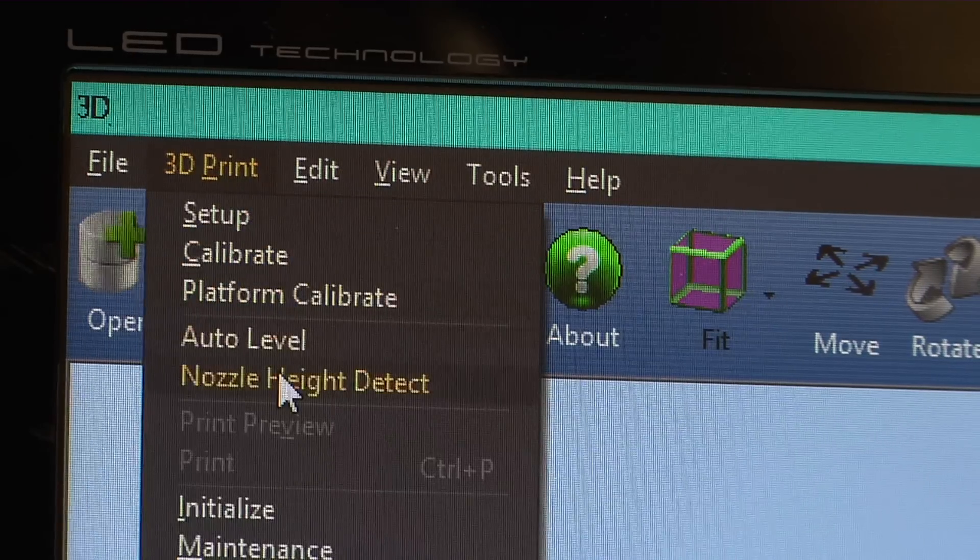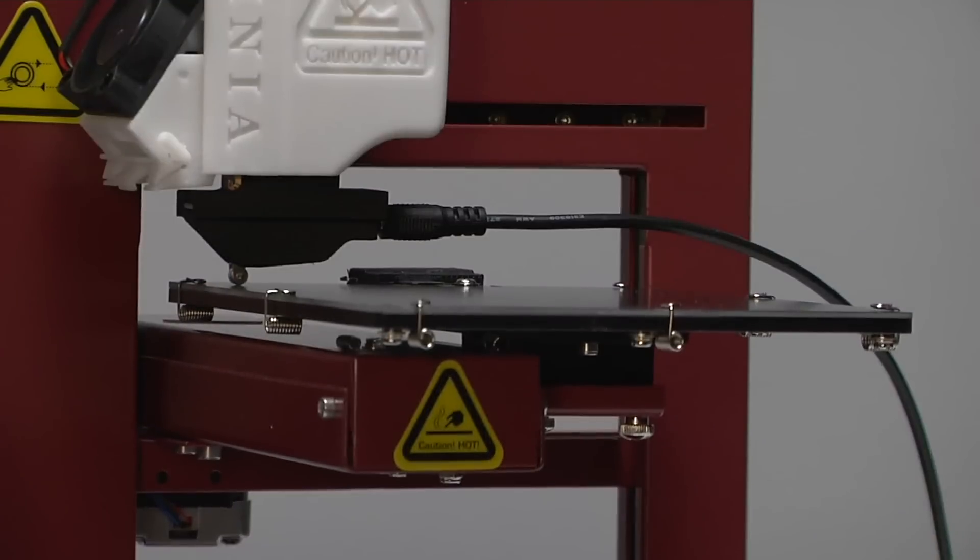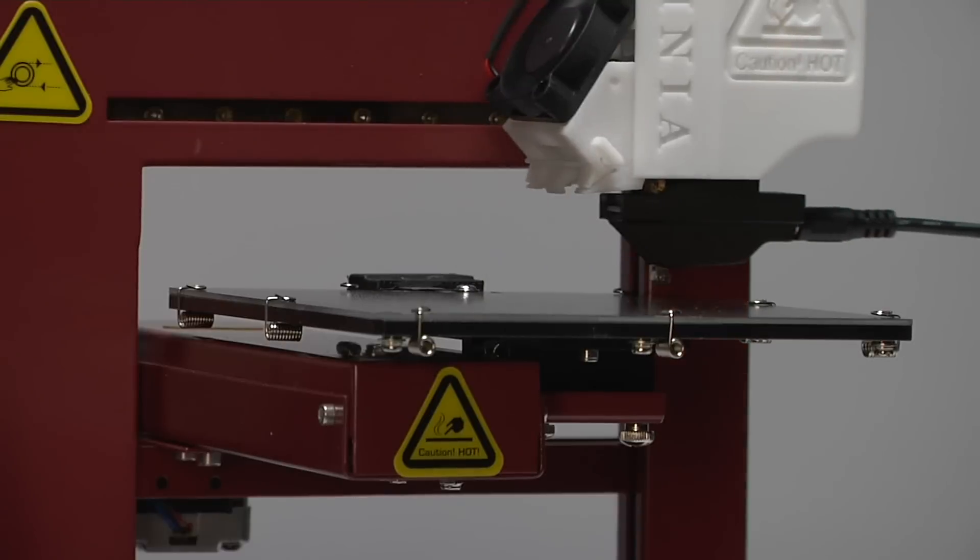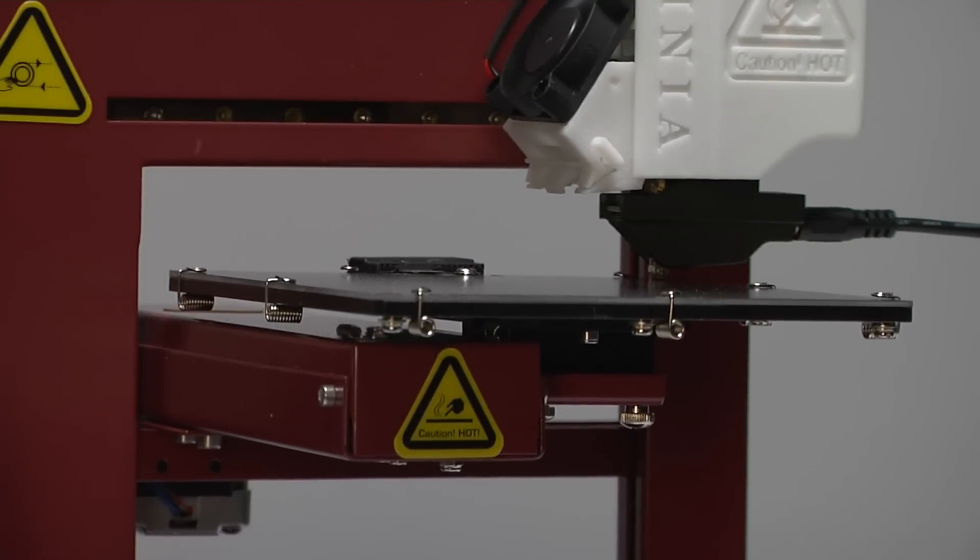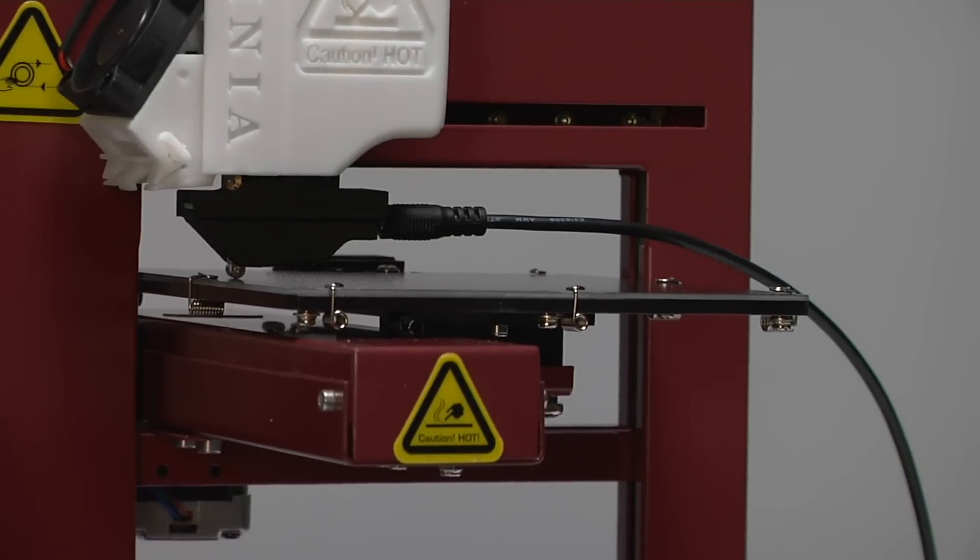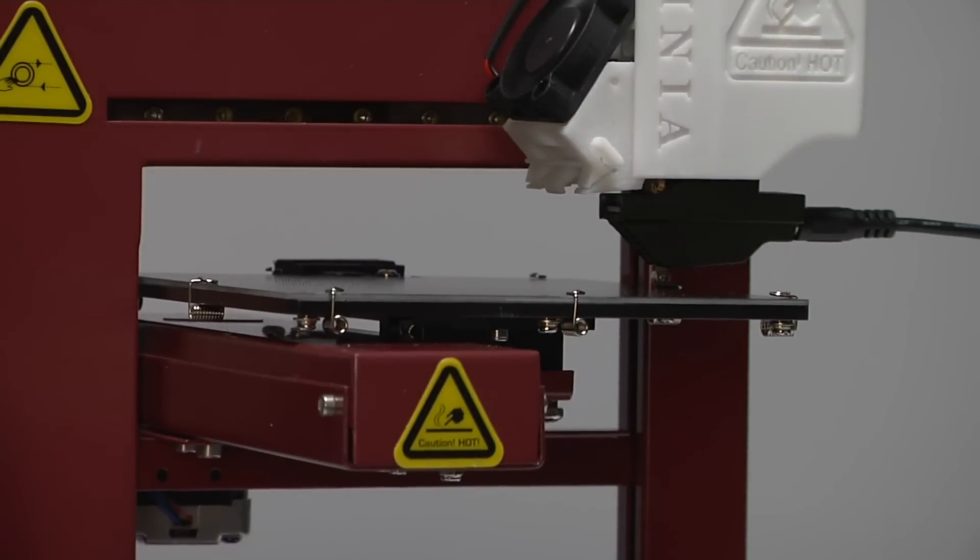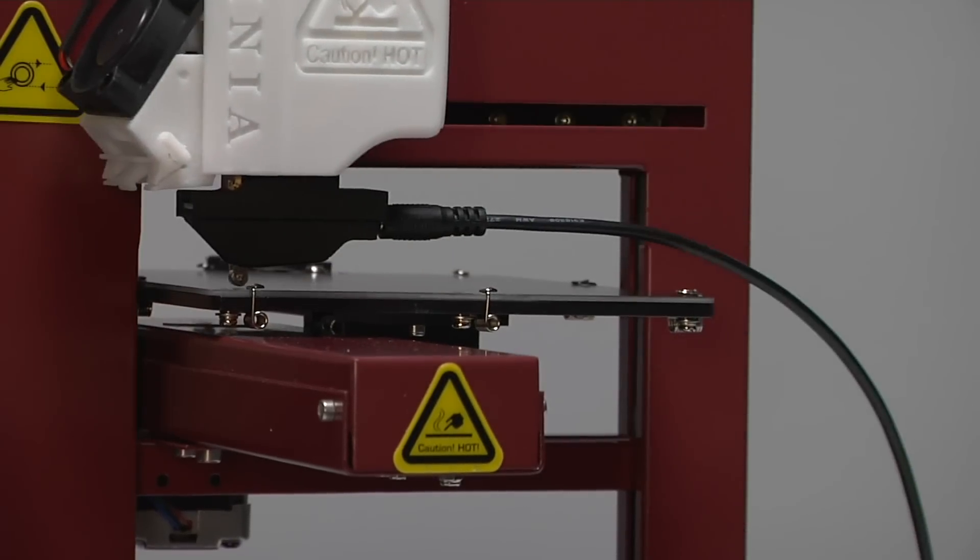Select auto level from the 3D print menu. The printer will raise the build platform and position the calibration probe over nine locations on the build platform while it measures the height. You will hear a faint click as it successfully measures each location. This process will take about 2 minutes 15 seconds.